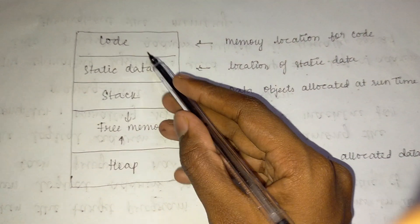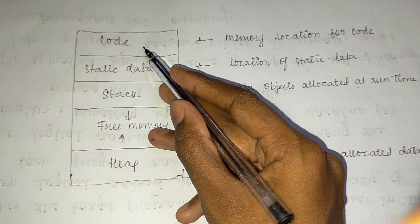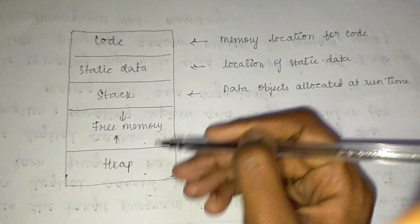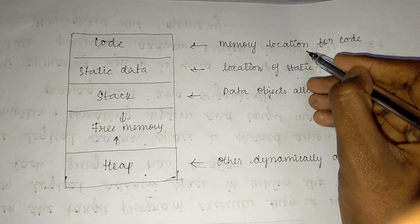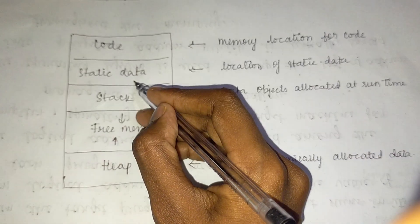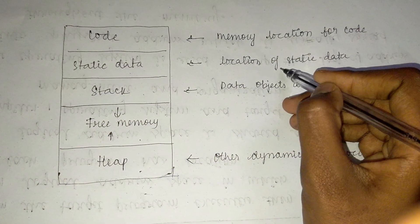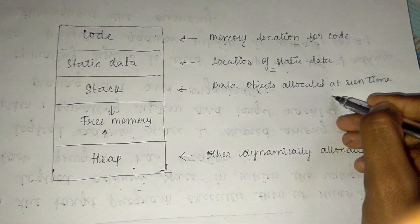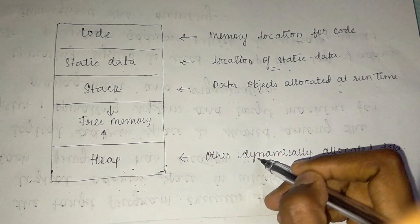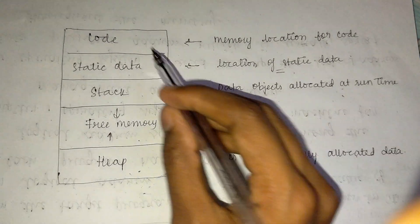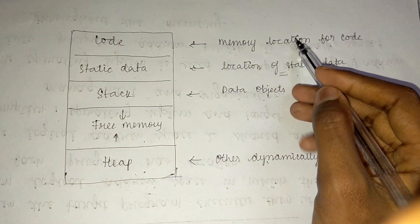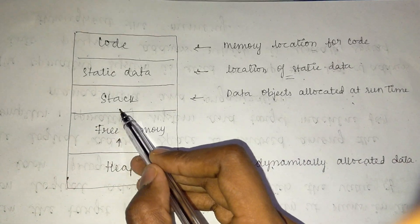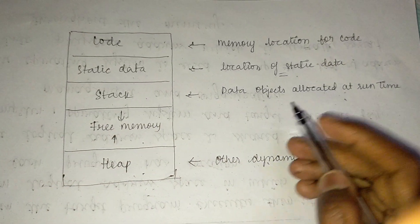Now let's see the diagram for storage organization. It consists of: code — which is the memory location for code; static data — which is the location of static data; stack — which holds data objects allocated at runtime; and heap — which holds other dynamically allocated data.